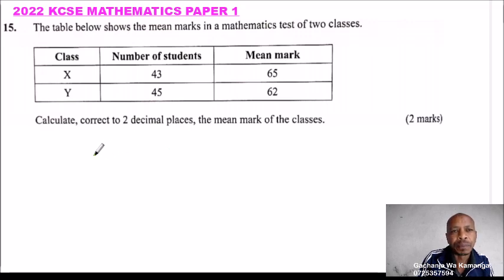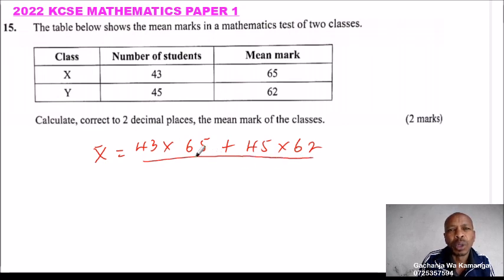So we say, mean, which we use x̄ is equals to total number of marks that was scored in X. So it is 43 multiplied by 65 plus total marks scored in class Y, which is 45 multiplied by 62. So that will give us a total mark that was scored in both classes. And then we divide by the total number of students, which is 43 plus 45.